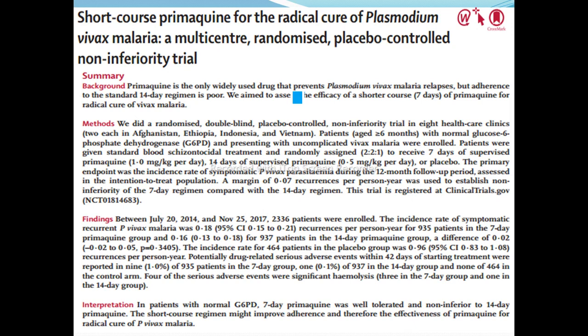Patients aged six months or older with normal G6PD presenting with uncomplicated vivax malaria were enrolled. Patients received standard blood schizontocidal treatment and were randomly assigned 2:2:1 to receive seven days of supervised primaquine at 1.0 mg/kg/day or 14 days of supervised primaquine at 0.5 mg/kg/day.